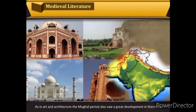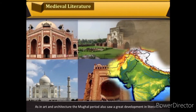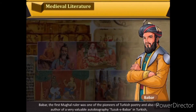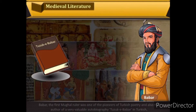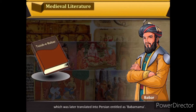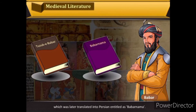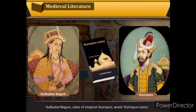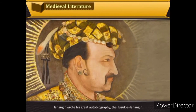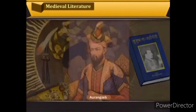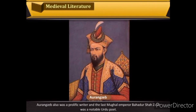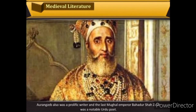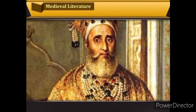As in art and architecture, the Mughal period also saw great development in literature. Babur, the first Mughal ruler, was a pioneer of Turkish poetry and author of the valuable autobiography Tuzuk-e-Babri in Turkish, later translated into Persian as Baburnama. Gulbadan Begum, sister of Emperor Humayun, wrote Humayunnama. Jahangir wrote his great autobiography the Tuzuk-e-Jahangiri. Aurangzeb was also a prolific writer, and the last Mughal emperor Bahadur Shah Zafar was a notable Urdu poet.